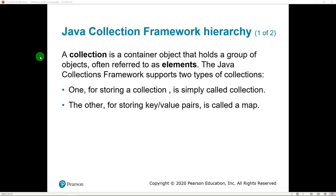We're going to be looking in particular at the Java Collection Framework. What is a collection? A collection is a container object - it holds a group of other objects, and we refer to those other objects as elements. The Java Collection Framework consists of two types of collections: one for storing a collection is simply called a collection, the other used to store key-value pairs is called a map. We're going to stick to collections for this chapter, and next chapter we'll look at different kinds of maps.